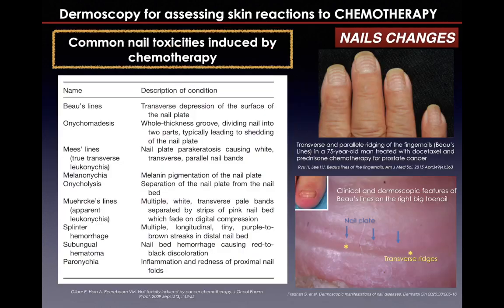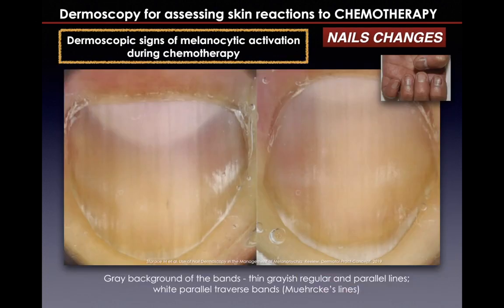Changes in the nail unit are also common during the course of systemic chemotherapy. Dermoscopy can be useful to identify features of melanocytic activation, such as a gray background of the band and thin, brownish, regular, and parallel lines. We can also see white parallel transverse bands, known as Mees' lines, as another sign of chemotherapy.